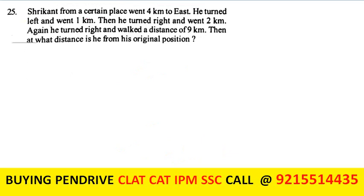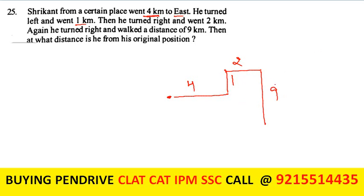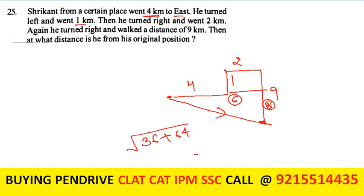Srikant went 4 km east, then turned left and went 1 km north, then turned right and went 2 km east, then turned right and walked 9 km south. The horizontal distance is 4 + 2 = 6 km east; vertical distance is 9 - 1 = 8 km south. Applying Pythagoras: √(36 + 64) = √100 = 10 km. The shortest distance is 10 km.